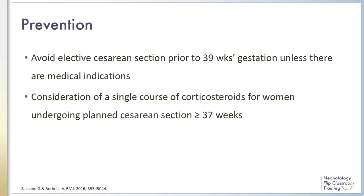The American College of Obstetrics and Gynecology recommends scheduling elective cesarean sections at 39 weeks gestation or later, as it is well known that infants delivered electively via c-section prior to 40 weeks gestation without proceeding labor are at increased risk for TTN. In fact, studies have shown that for every week less than 41 weeks that an infant delivers, there is a stepwise increased risk for TTN.